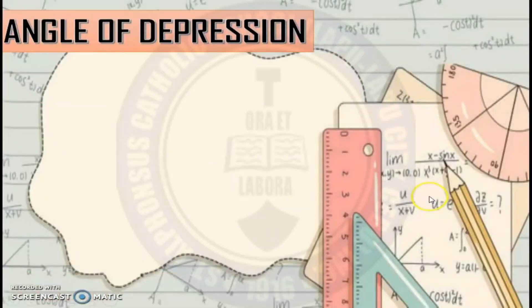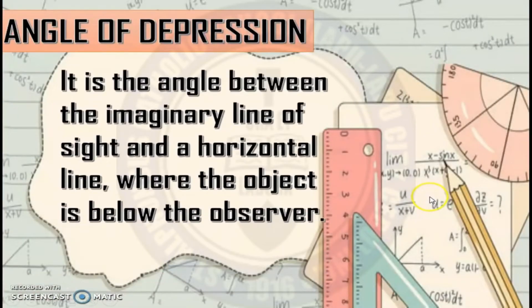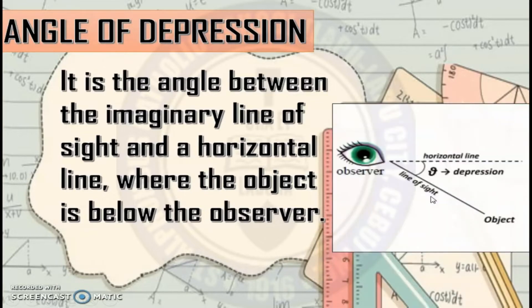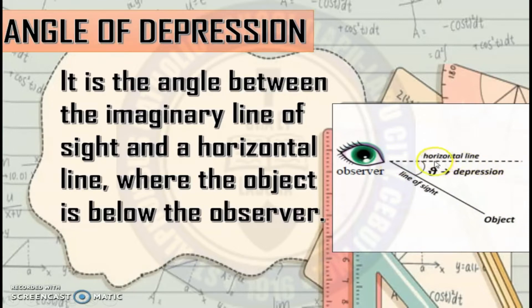Angle of depression is the angle between the imaginary line of sight and the horizontal line where the object is below the observer. For example, you are on top of a building and you are looking at the people, cars, or trees below that building. This is your line of sight towards that object, and here is the horizontal line. The angle of depression is the angle between the horizontal line and your line of sight.